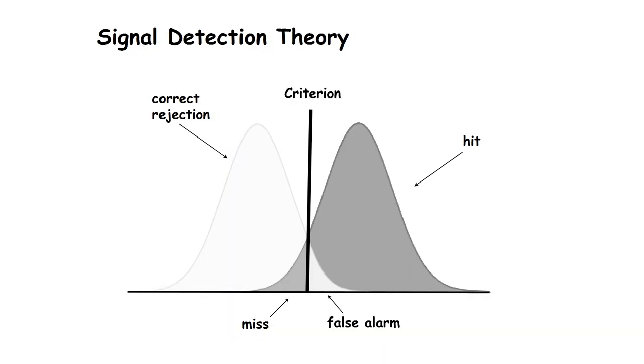Signal detection theory helps us quantify decisions in the presence of sensory uncertainty. It proposes two distributions, one representing the signal to be detected and the other noise. Hits occur when the signal is present and the subject says it is. Misses occur when the signal is present and the subject says that it's not. False alarms occur when the signal is absent but the subject reports it's present. And correct rejections occur when the signal is absent and the subject says it's absent.